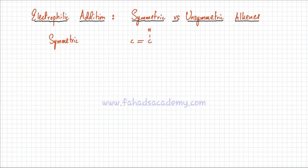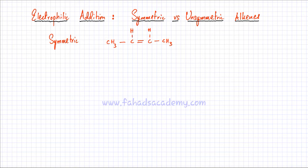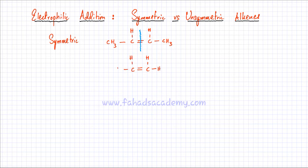For example, I have a molecule of but-2-ene. But-2-ene has four carbon atoms and there's a double bond on the second carbon atom. If you look at this molecule, around the double bond, the left hand side and the right hand side of this alkene is exactly the same. I can also look at ethene — the arrangement of atoms around the double bond is exactly the same on both sides.